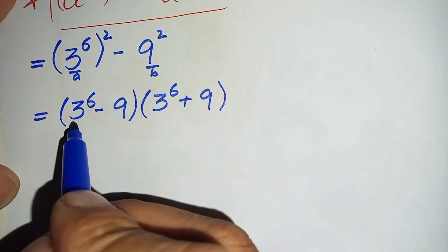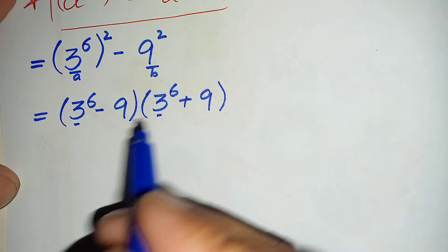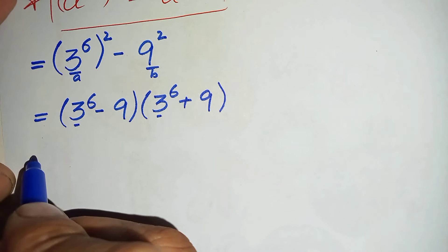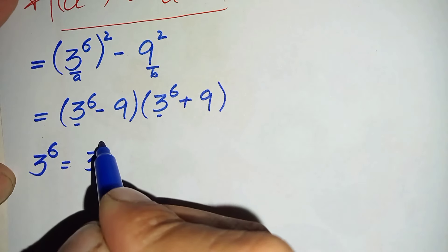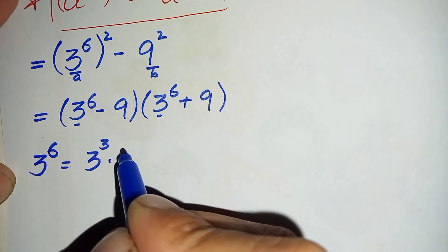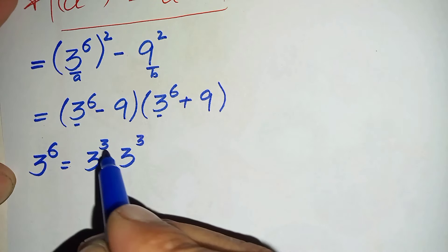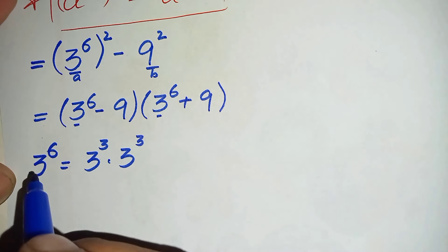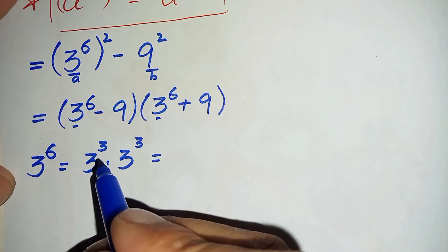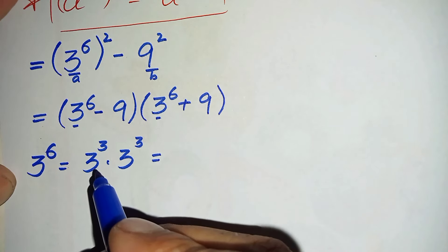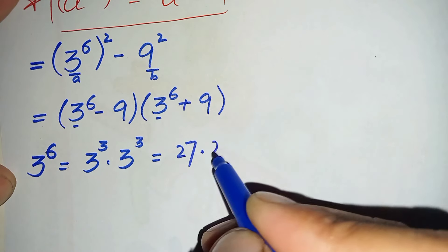Here we will find the value of 3 raised to power 6 to substitute into the equation. Now 3 raised to power 6 is the same as 3 raised to power 3 times 3 raised to power 3, because the base is the same so we add their powers to get 3 raised to power 6. The value of 3 raised to power 3 is: 3 times 3 is 9, and 9 times 3 is 27. So we need to multiply 27 by 27.